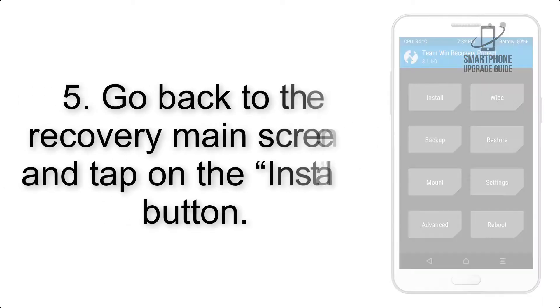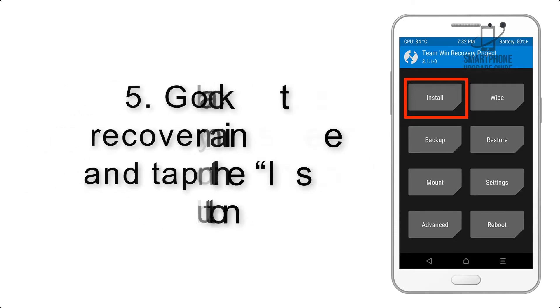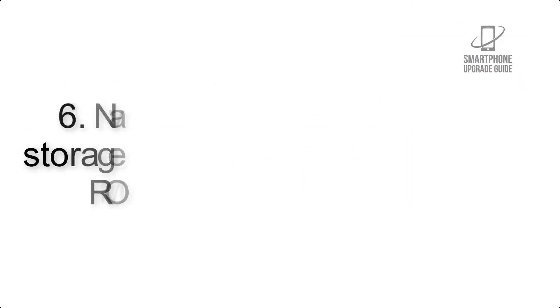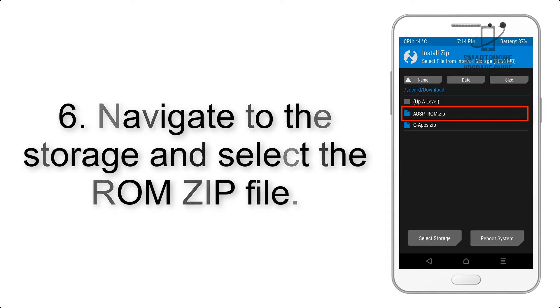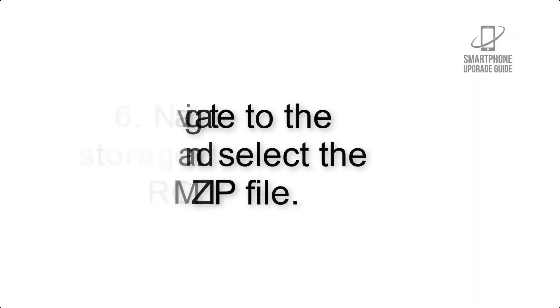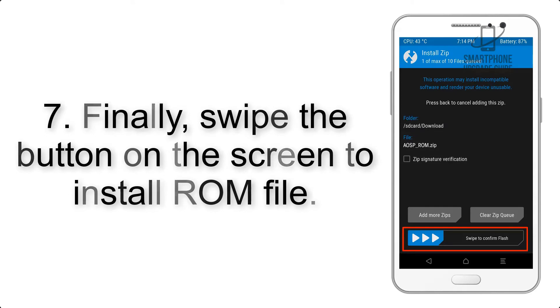Step 4: Swipe the button to wipe the device. Step 5: Go back to the recovery main screen and tap on the Install button. Step 6: Navigate to the storage and select the ROM zip file.